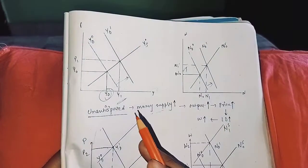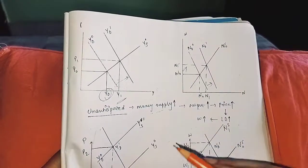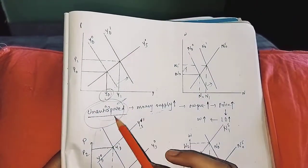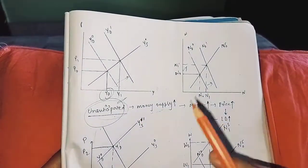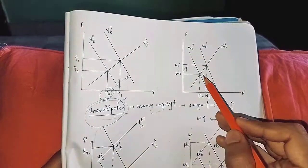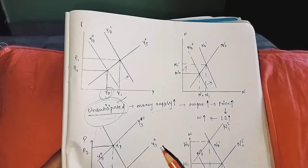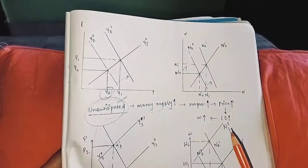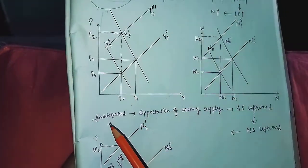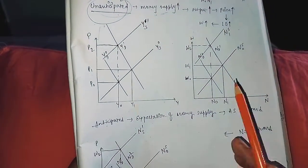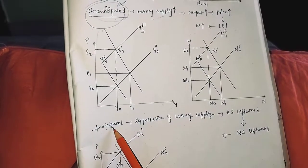In the long run, the case is similar for unanticipated policy. In the short term, output and employment increase, then come back to equilibrium position. This is where classical economists and Keynesian economists are different. When classical economists say anticipated policy, if people expect, like our example of unemployment and money supply, if people expect, then what happens?